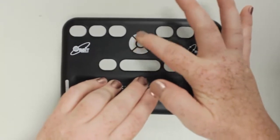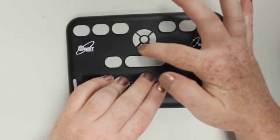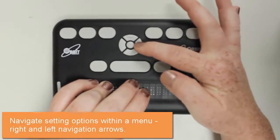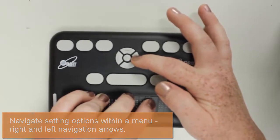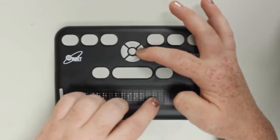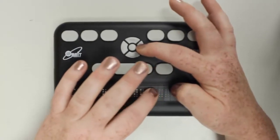You can change that blink rate. Remember how we used our up and down arrow keys to move among the menu choices? For the menu options, you use your right and left navigation arrows. If I want to change this to a different blink rate, I can use my right arrow. And now it says five. You'll see that there's not a dot seven and eight underlining that five now.